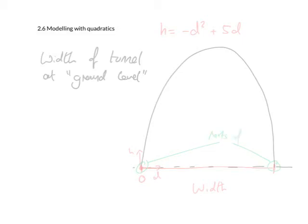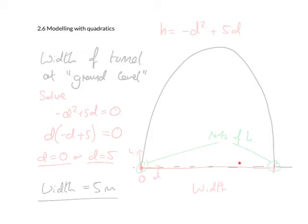And we find them by setting f of x, which we don't have an f of x, we only have h, as being equal to 0. So we change h to 0, and we solve that. We get values of 0 and 5, and the difference between these values give me the width. So the width at the base of the tunnel is 5 metres.